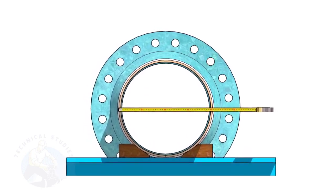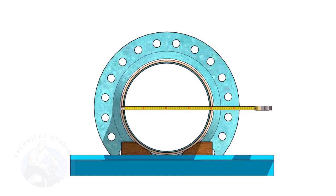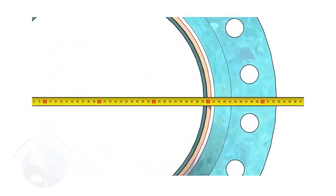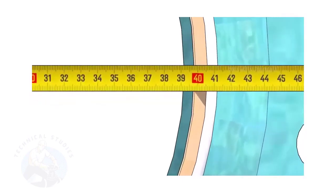Check the outer diameter of the pipe. Here, the diameter of the pipe is 406 millimeters.